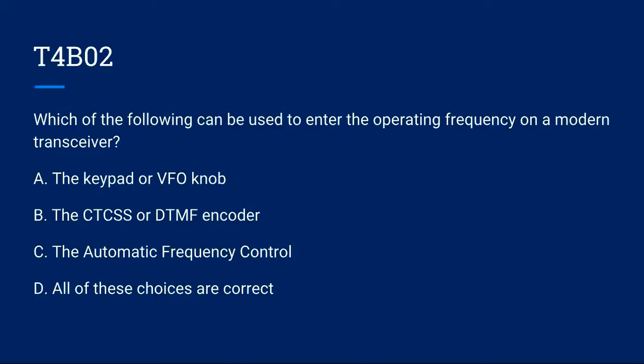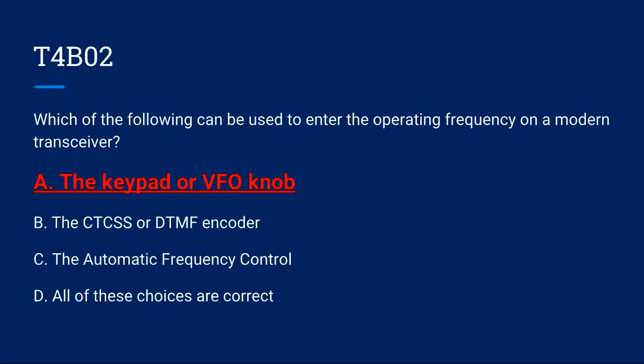T4B02: Which of the following can be used to enter the operating frequency of a modern transceiver? A. The keypad or VFO knob. B. The CTCSS or DTMF encoder. C. The automatic frequency control. D. All of these choices are correct. The correct answer is A. The keypad or VFO knob.